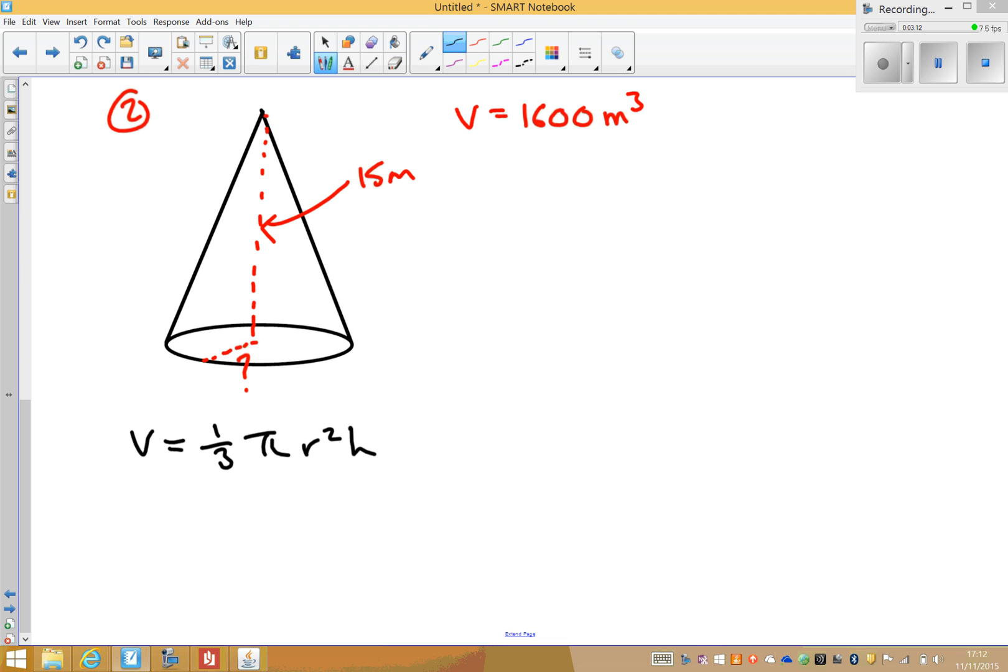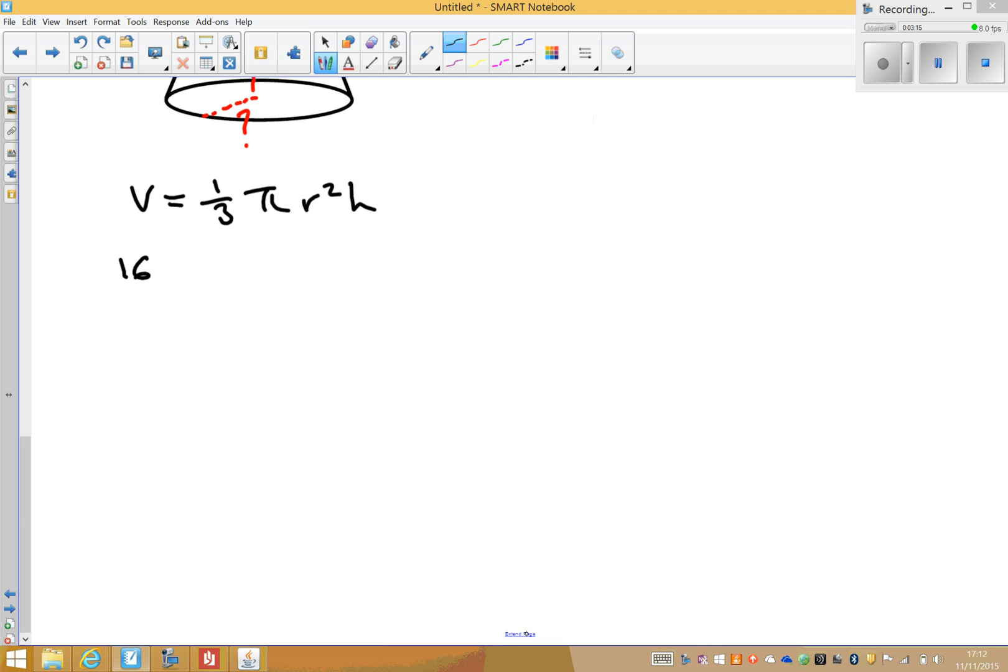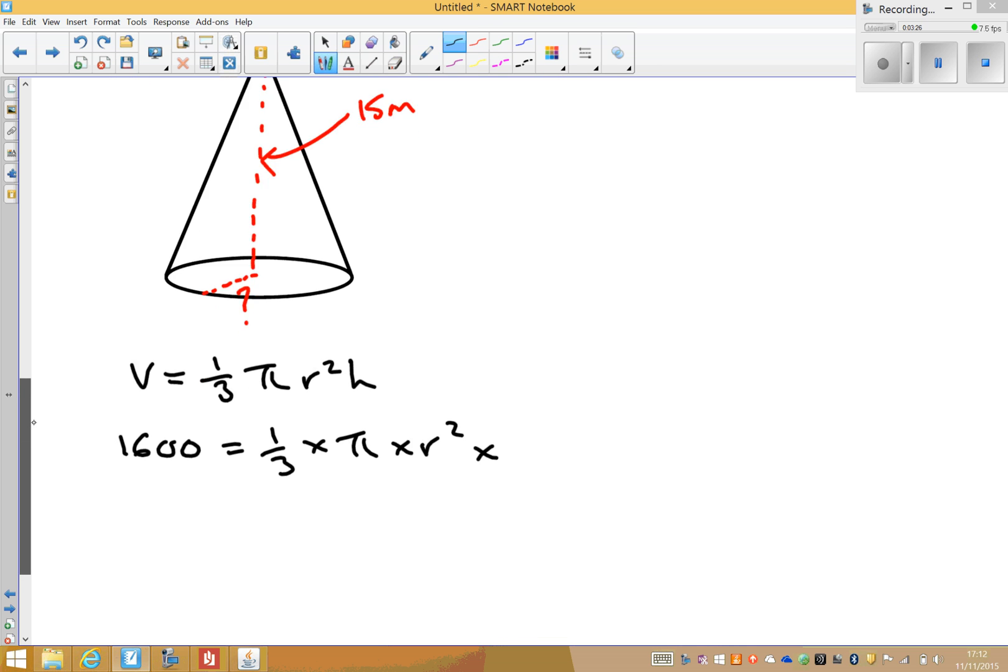So again, put in the information that you know. So we know that the volume is 1,600, that's equal to a third times pi times the radius squared, which we don't know, times by the height, which was 15 meters.